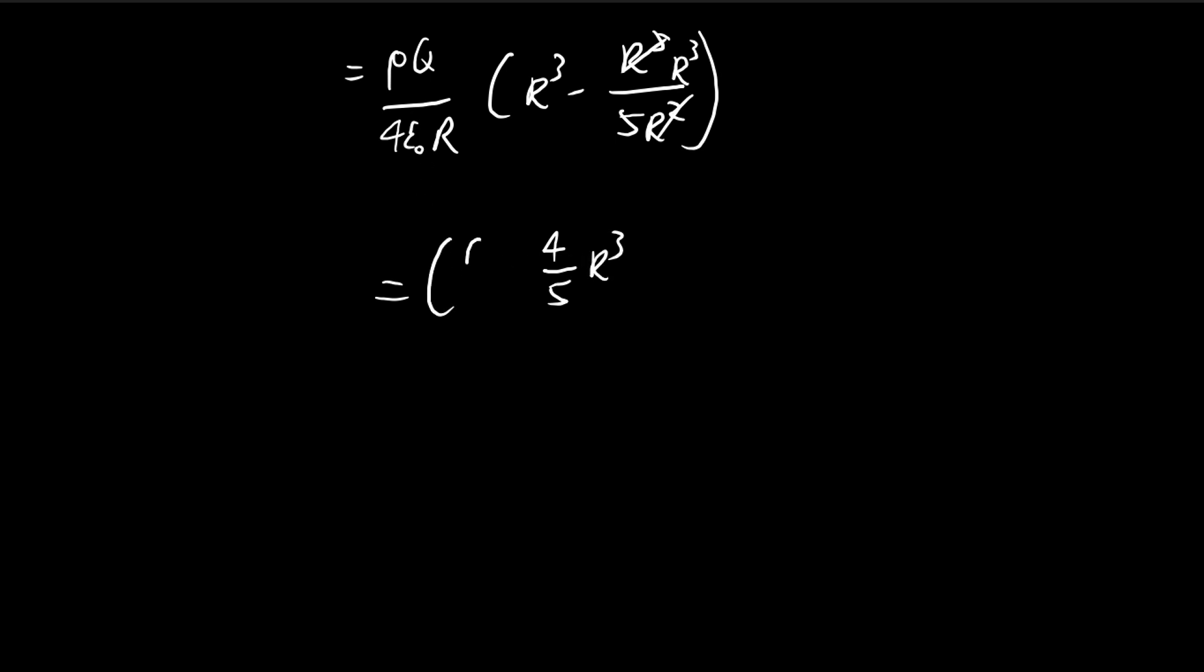I'm going to write out the constants. For the charge density ρ, I want to get rid of this because I want to describe the final answer in terms of the total amount of charge. So instead of writing ρ, I'm going to use ρ = 3Q/(4πR³).